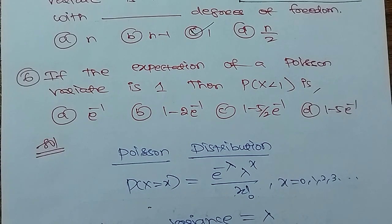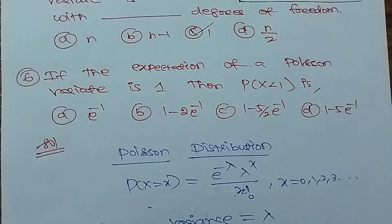If the expectation of a Poisson variate is 1, then the probability of excellence — P(X < 1) — is: Option A: e power minus 1, Option B: 1 minus 2e power minus 1, Option C: 1 minus 5/2 e power minus 1, Option D: 1 minus 5e power minus 1.